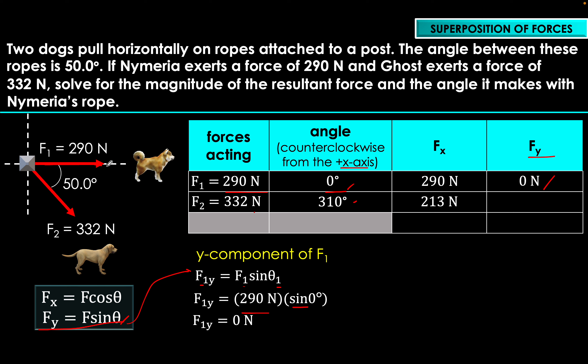To find the resultant force, we visualize Rx and Ry as vectors. Rx is 503 Newtons pointing rightward (positive), and Ry is 254 Newtons pointing downward (negative). The resultant force is drawn from the tail of the first vector to the head of the second — this is essentially the polygon method of vector addition.